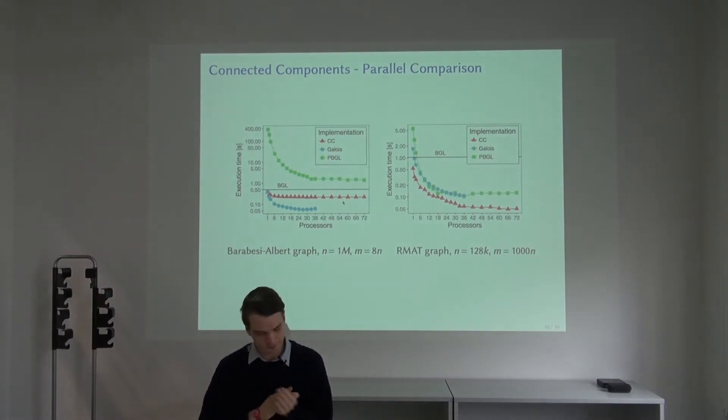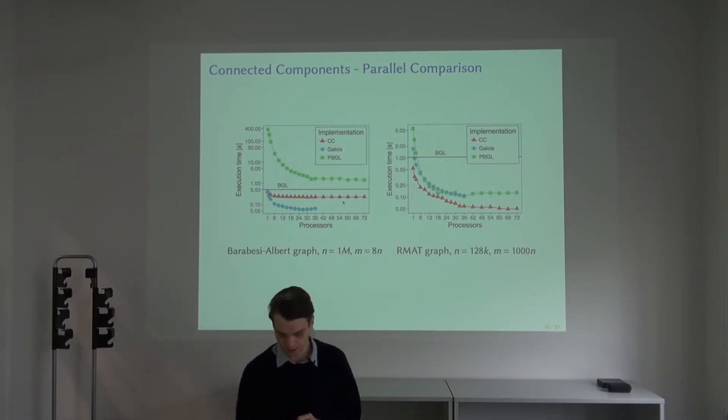We compared with the parallel boost graph library, which is a distributed memory code. Then we also compared with Galois, which is a shared memory parallel code that does not scale beyond one node. This is why you see that the Galois measurements are only up to 36 processors. You see if we have enough parallelism, then we have better constant factors than all of the codes that we compared to.